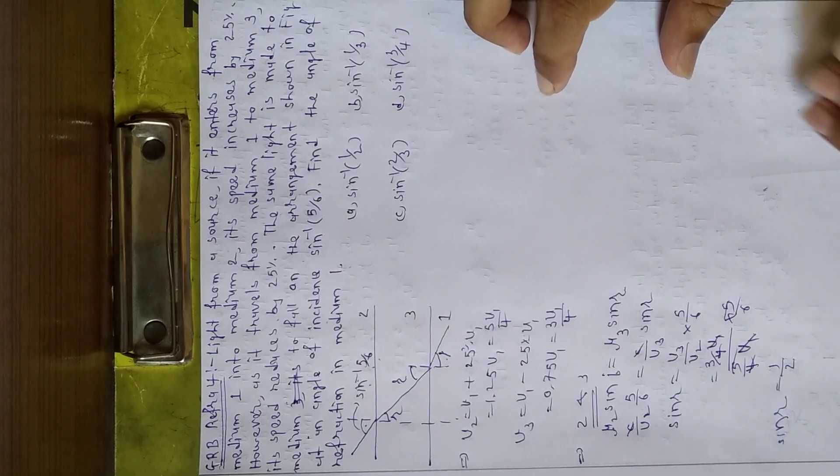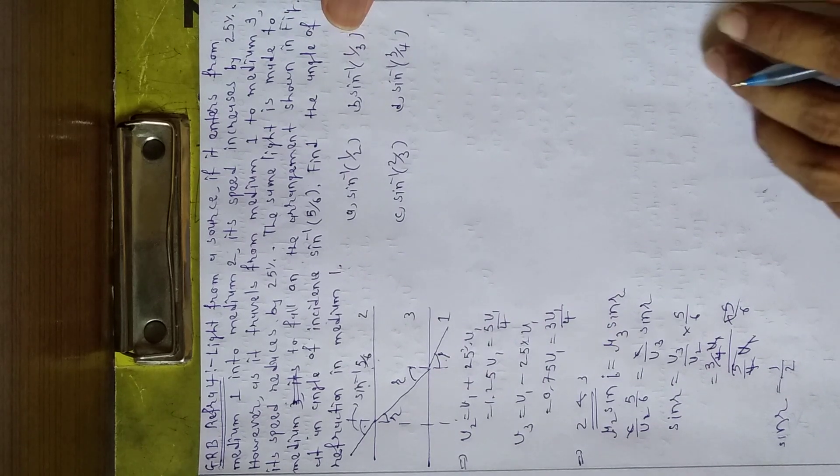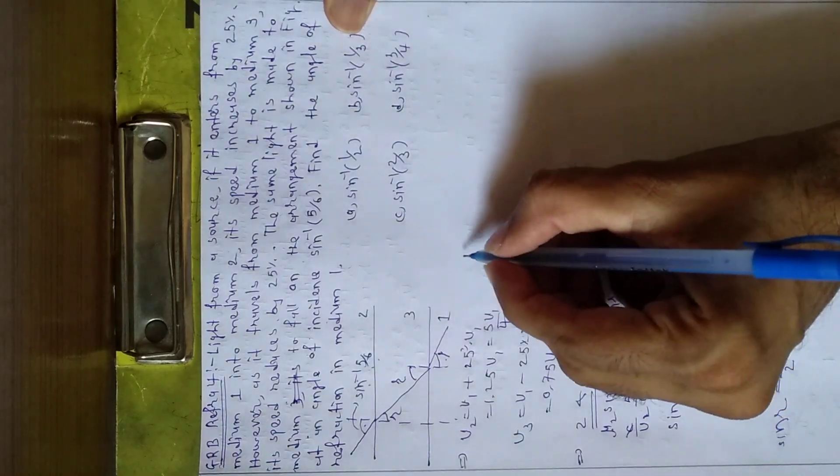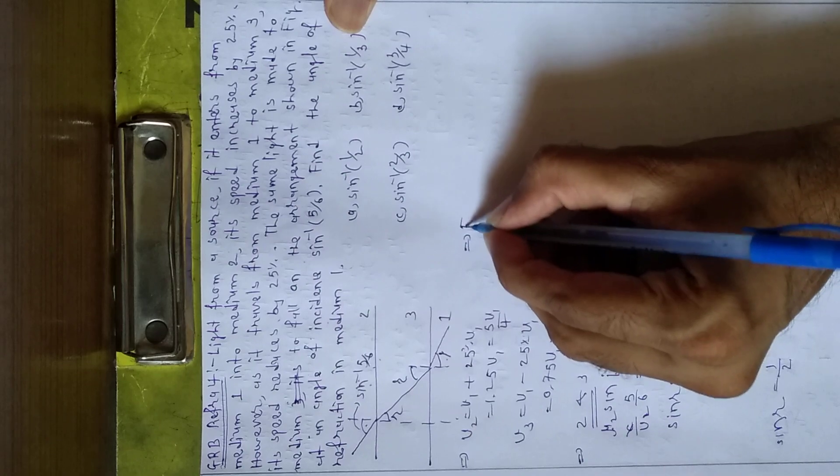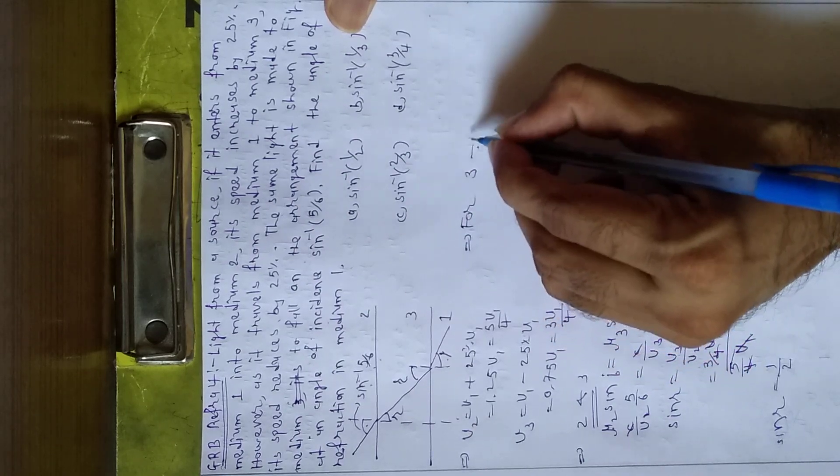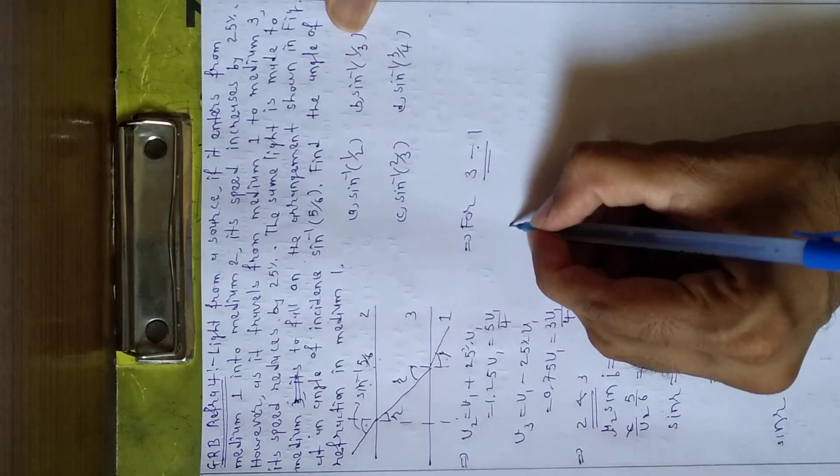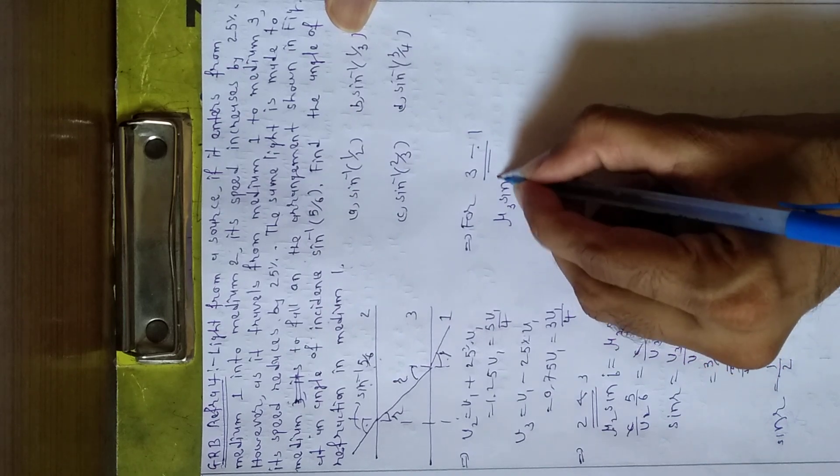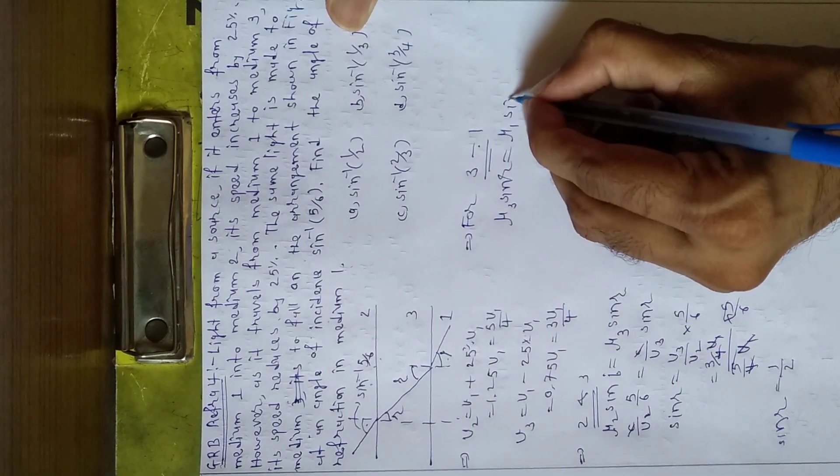Now next, between 3 and 1, Snell's law: mu 3 sin r equals mu 1 sin e.